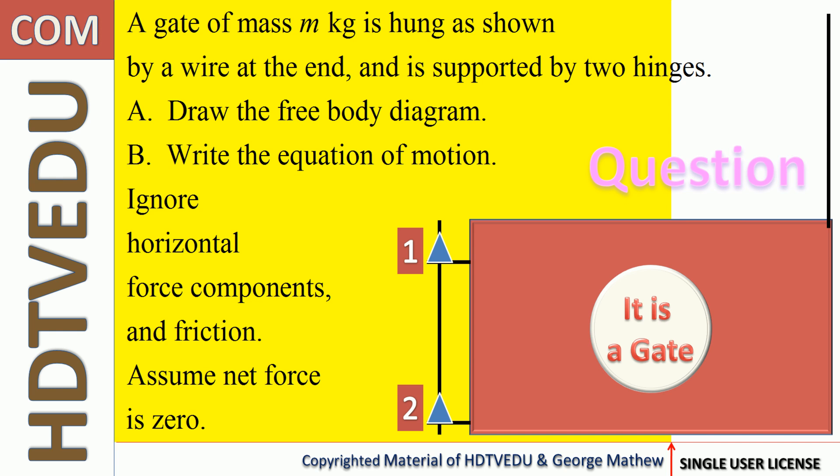A gate of mass m kg is hung as shown by a wire at the end. This is the wire at the end, and it's supported by two hinges — one hinge here and another hinge here. Draw the free body diagram, write the equation of motion, and ignore horizontal force components and friction.